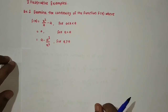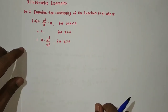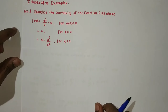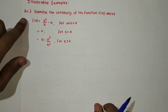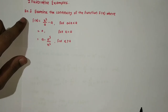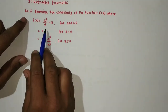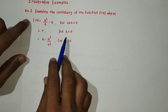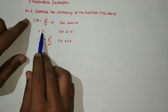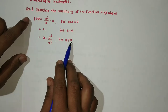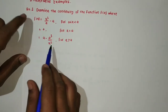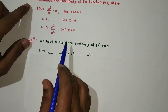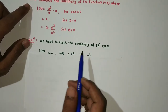Welcome students to the next lecture of calculus. In this lecture we are going to discuss problems based on our first chapter. Example number one: examine the continuity of the function f(x), where f(x) = x²/(a - a) when x lies between 0 and a, f(a) = 0 when x equals a, and f(x) = a - a³/x² when x is strictly greater than a.